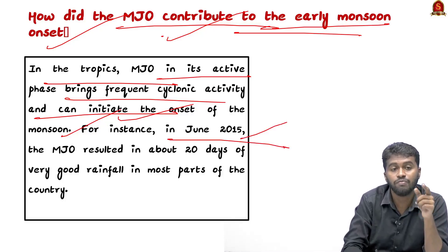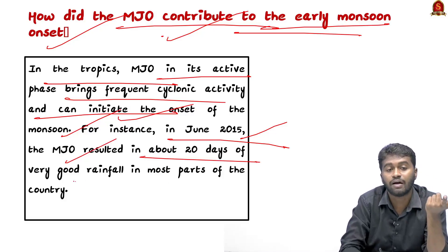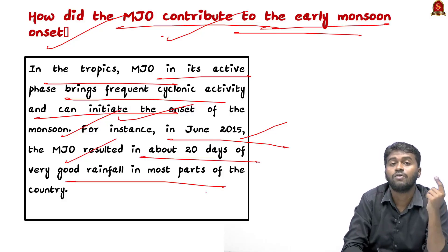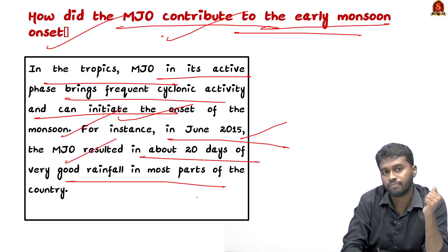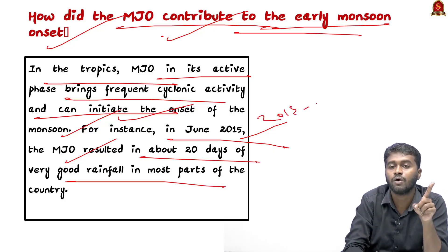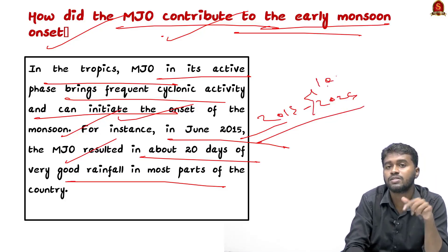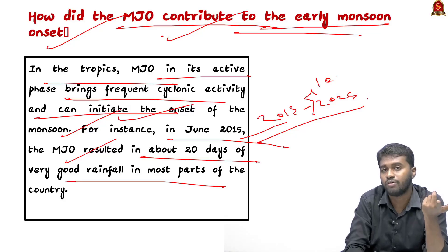Before this, ten years ago in 2015, due to the Madden-Julian Oscillation, various parts of India received very good rainfall for nearly 20 days. There is a possibility that we may witness another such significant event in 2025, given this apparent interval of roughly ten years.